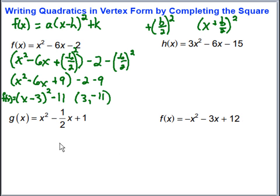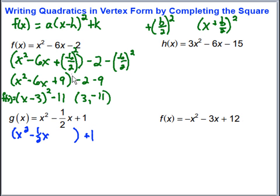This next one looks a little scary because we've got a fraction, but it's going to be the same process. We start by pulling it apart so we can add in our b over 2 squared piece: x squared minus one-half x in parentheses, with plus 1 on the outside. My b is negative one-half, so I'm going to add negative one-half over 2 squared inside, and subtract negative one-half over 2 squared on the outside.